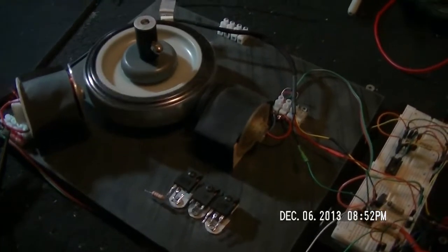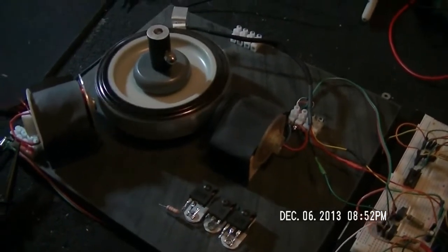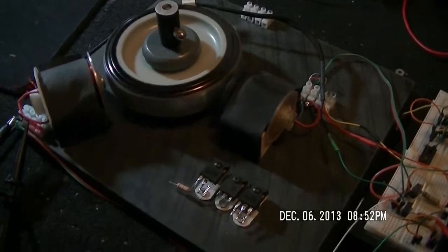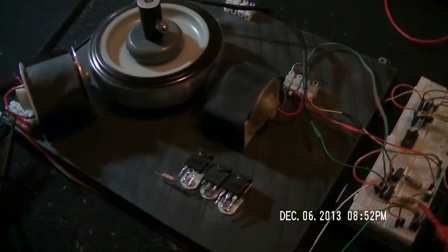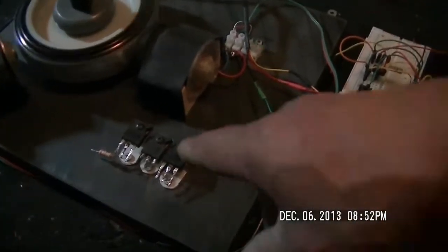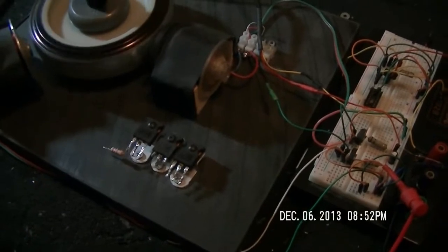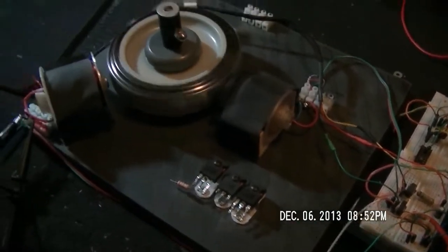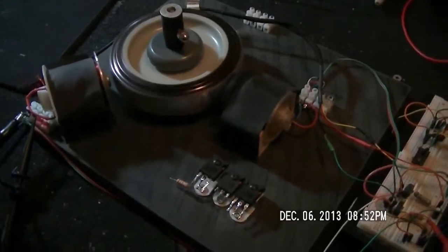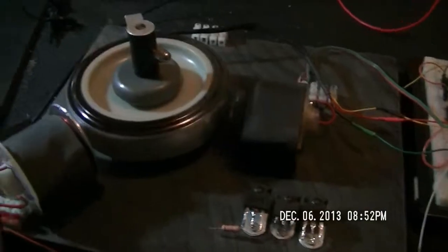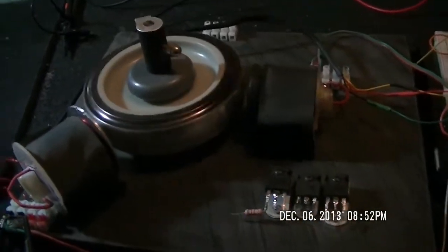I originally drove this wheel with the Bedini circuit. I was using those 3055 transistors. It goes pretty good because I've gotten it up to around like 1700 RPMs or something.